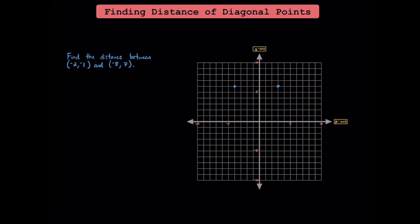While it's easier to find the distance between horizontal points and vertical points, it takes a little bit more work to find the distance between diagonal points. To find the distance between the point negative 2 comma negative 1 and the point negative 8 comma 7, we need to find their horizontal and vertical distance from each other.